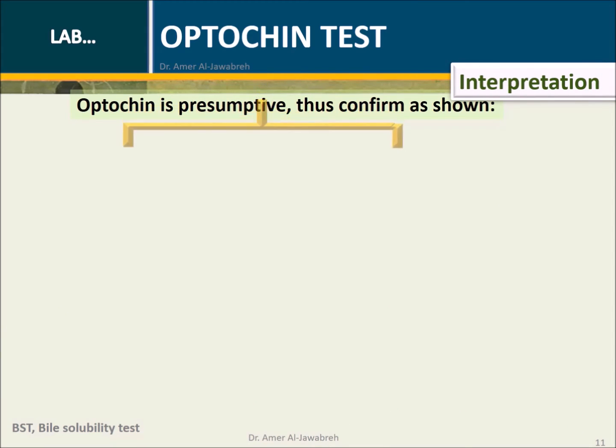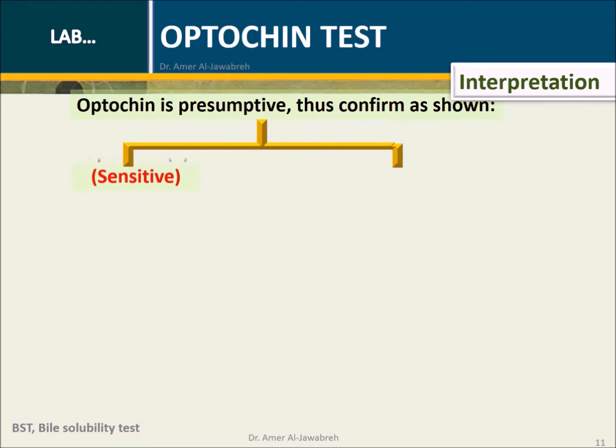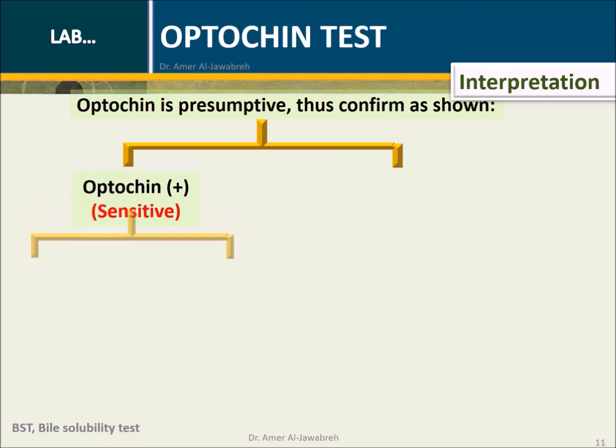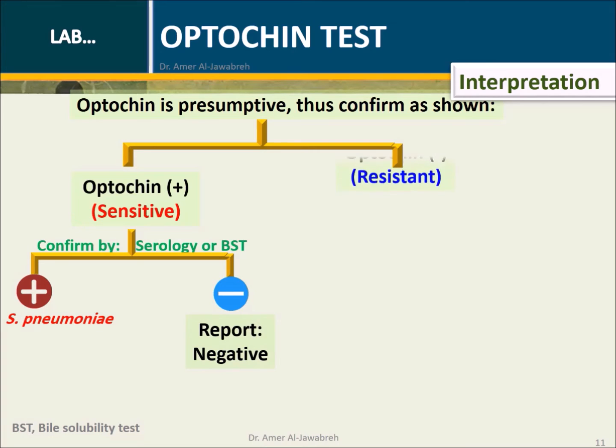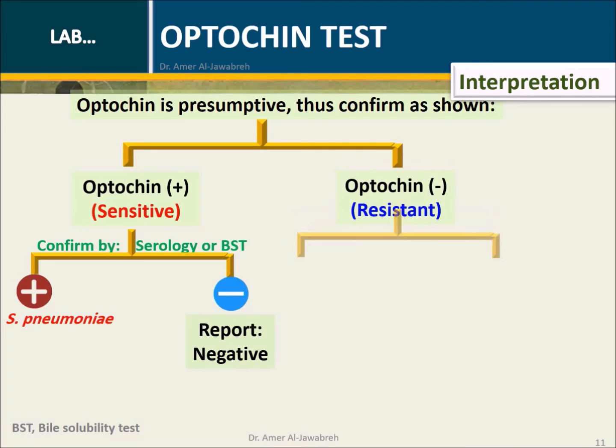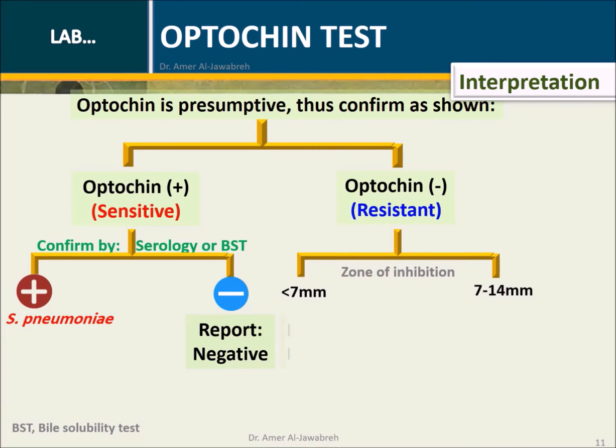The optochin test is only presumptive. It is confirmed by serology, bile solubility test, or quellung test, as shown here.